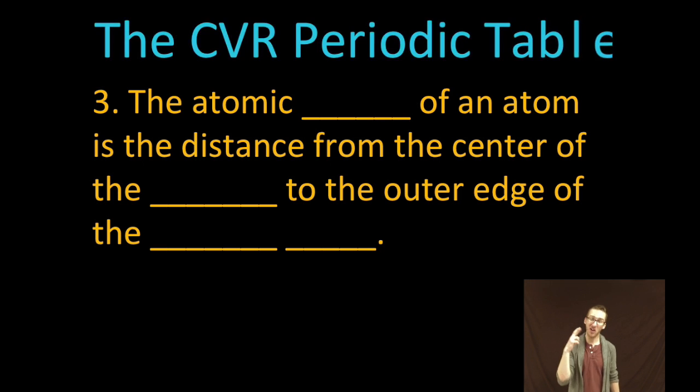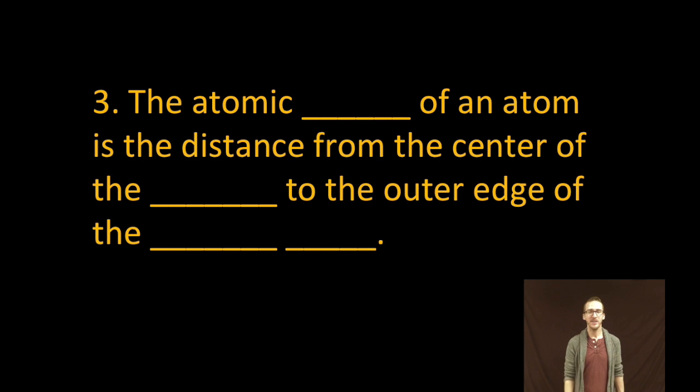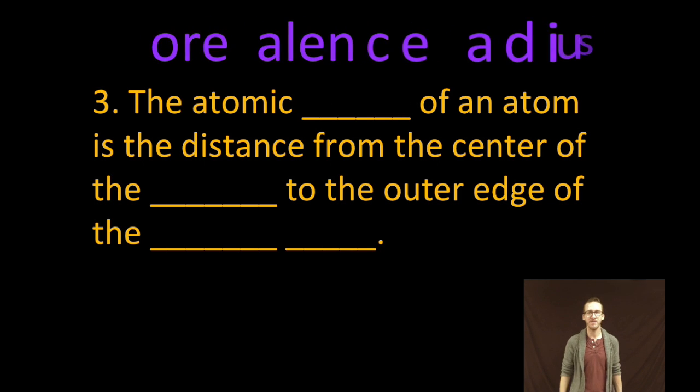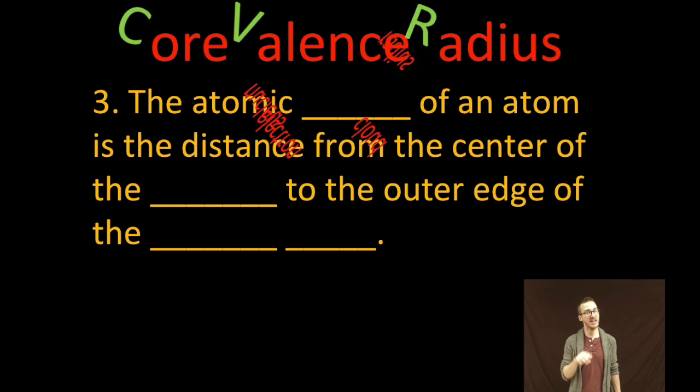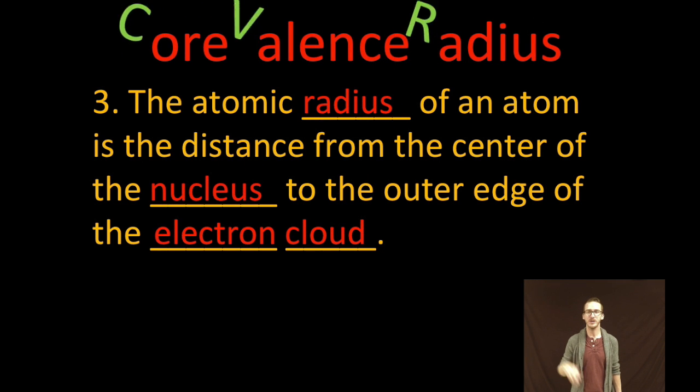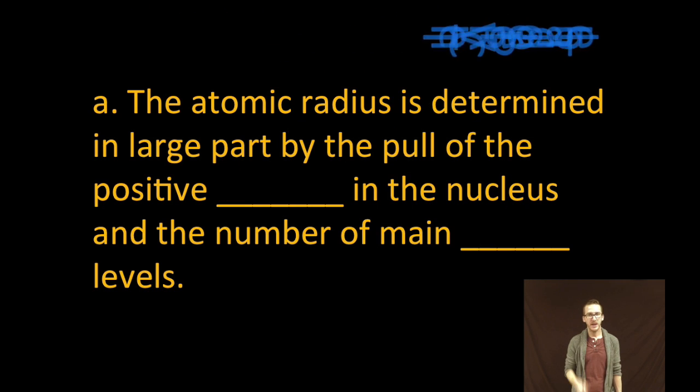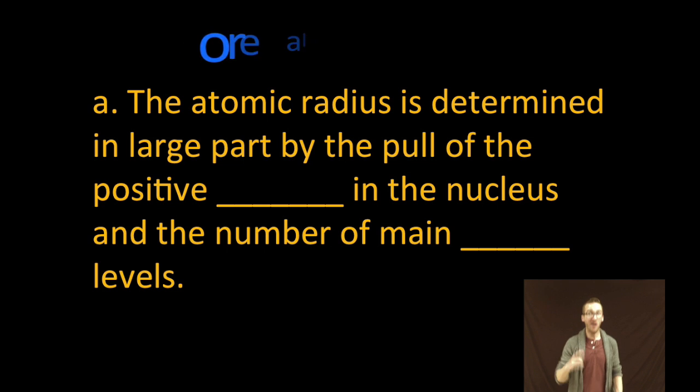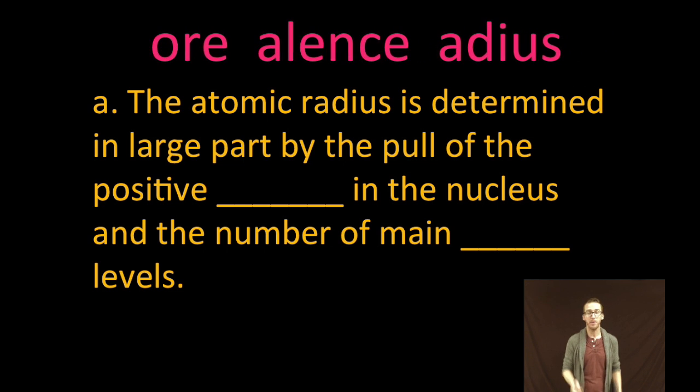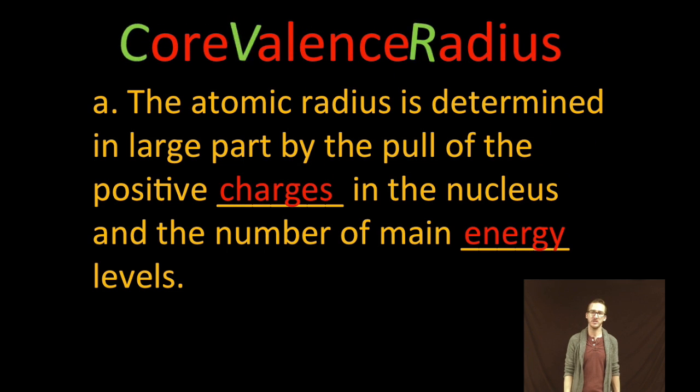And then lastly, R in CVR—the atomic radius of an atom is the distance from the center of the nucleus to the outer edge of the electron cloud. And that radius, or that R, is determined in large part by the pull of the positive protons in the nucleus and the number of main energy levels.